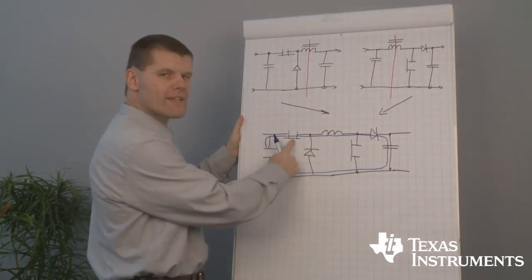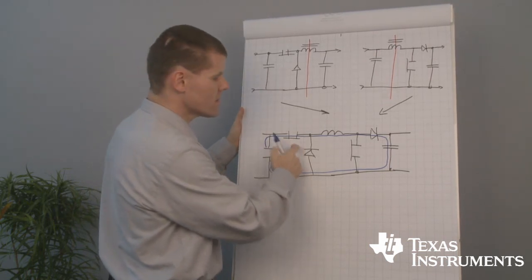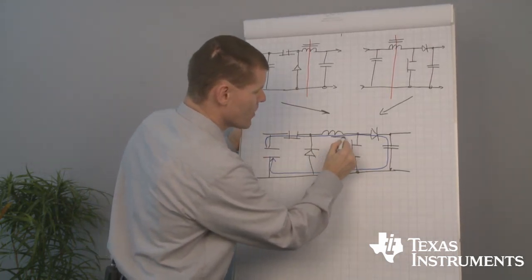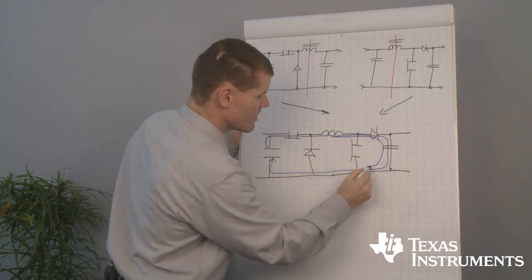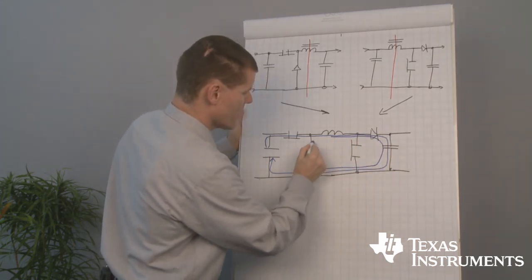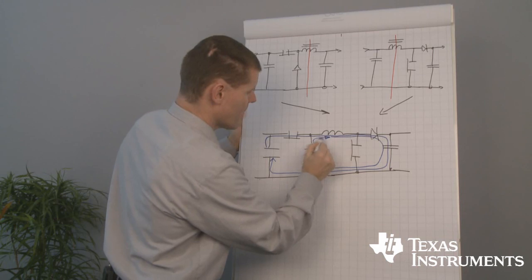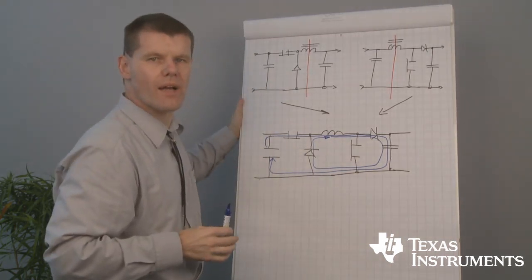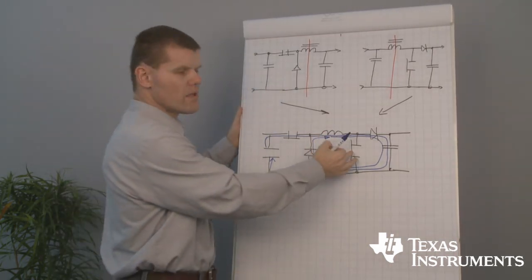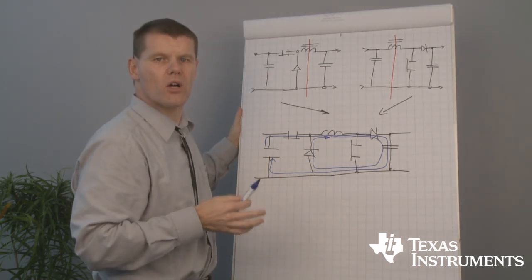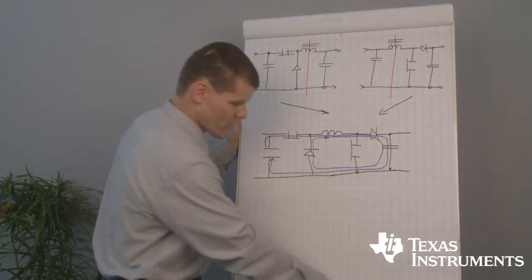When the high side FET opens, the inductor forces the current across the freewheeling diode. The low side FET. That's the basic buck mode inside the buck boost converter.